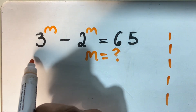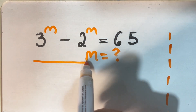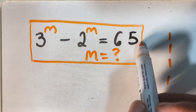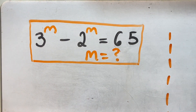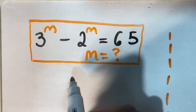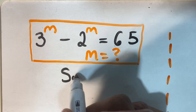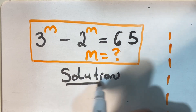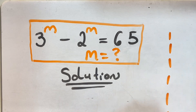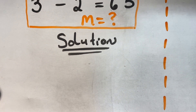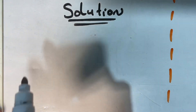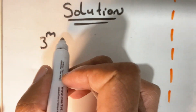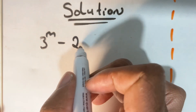Greetings again everyone, welcome back to my channel. In today's lesson we are going to be looking at another equation where we have 3 to the power of m minus 2 to the power of m is equal to 65, and we are given to solve m. If you would like, you can pause this video and try to solve this equation, or go ahead and look at my previous videos on how to solve these exponential equations. So let us now go ahead and solve this equation.